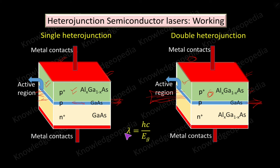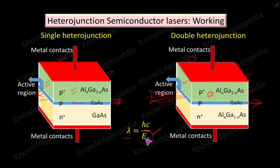The wavelength of the emitted light is given by λ = hc/Eg, where Eg is the energy gap of the material used in the active region.